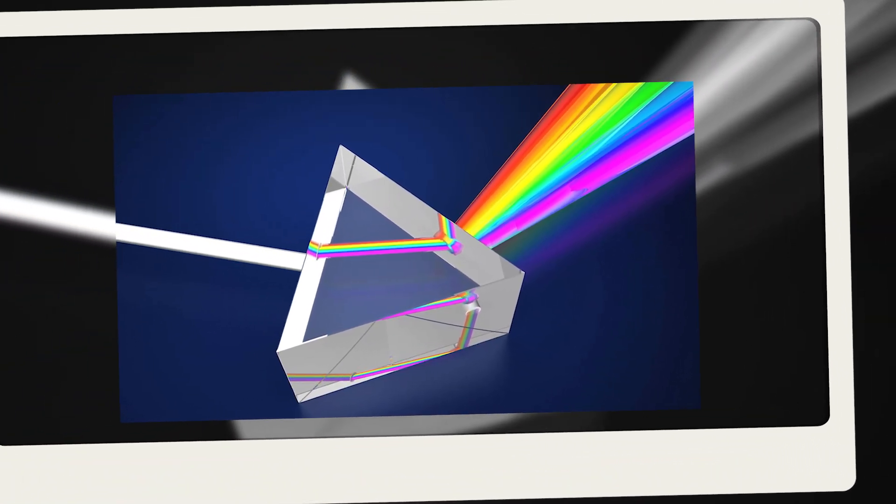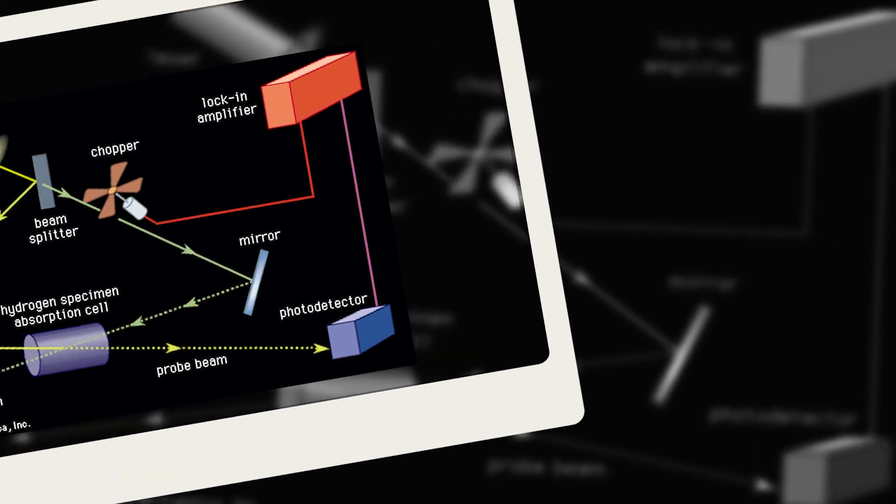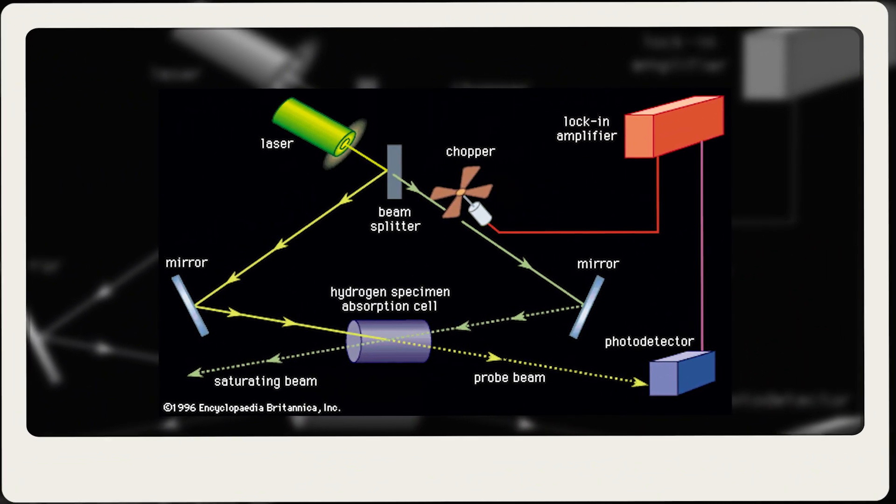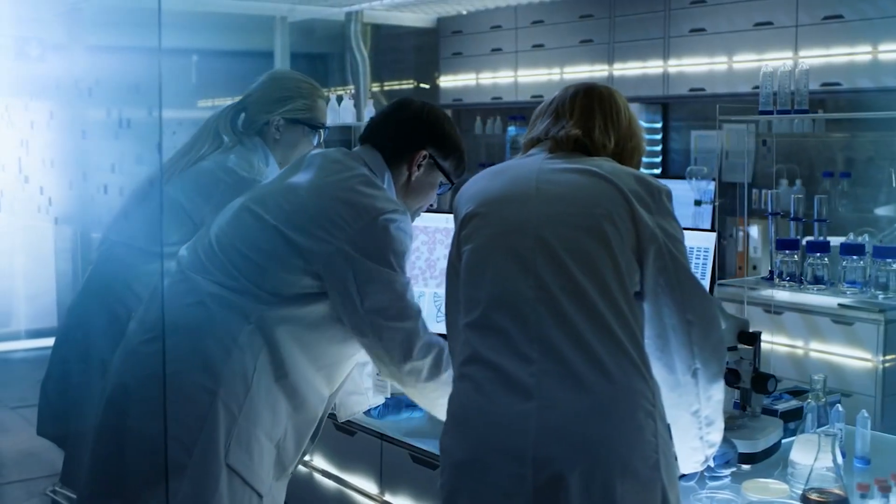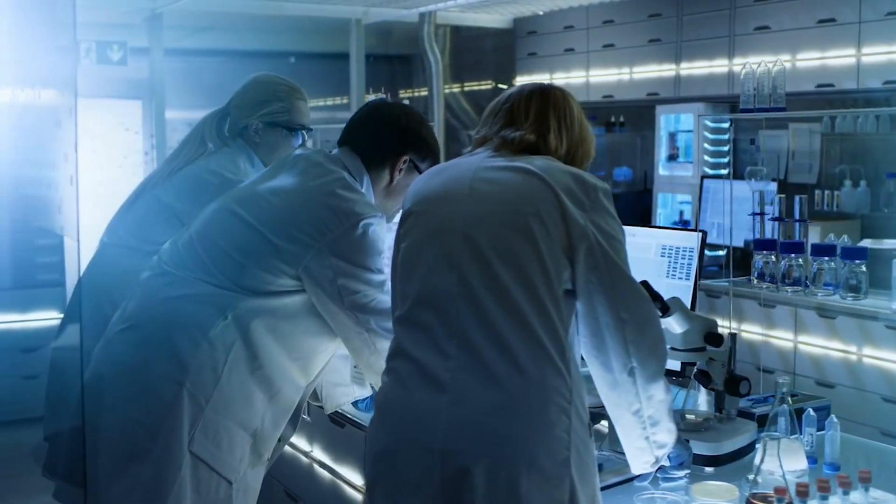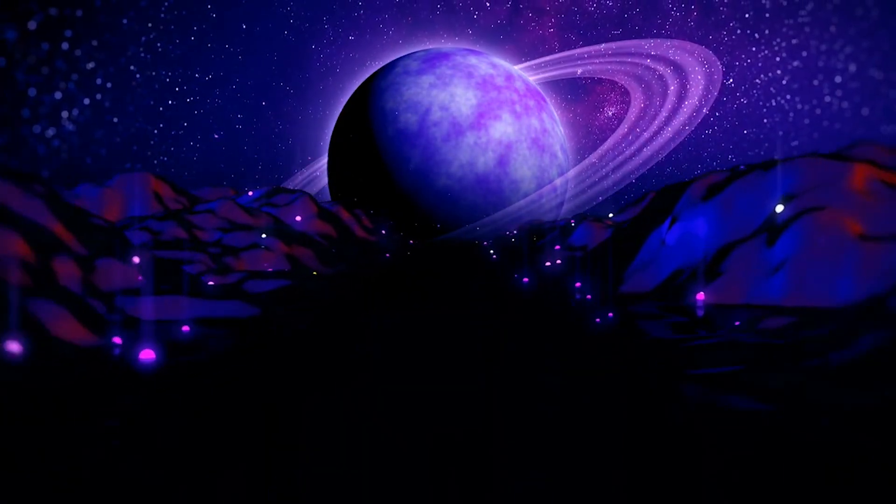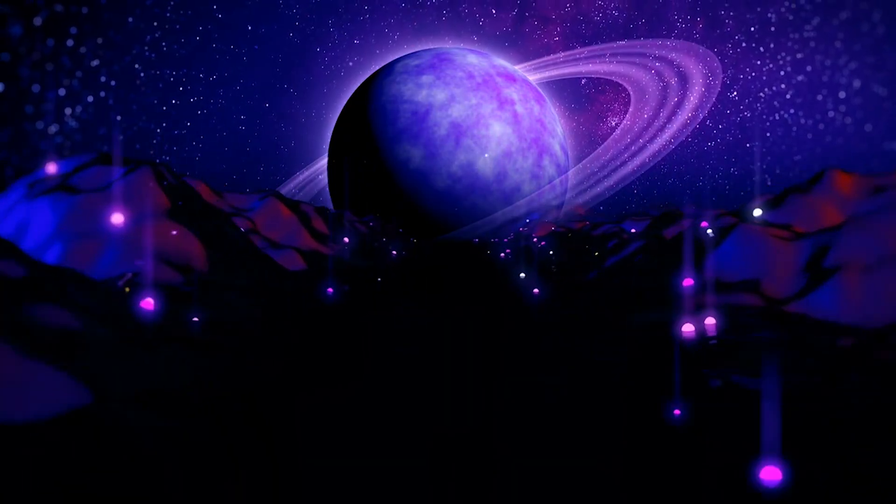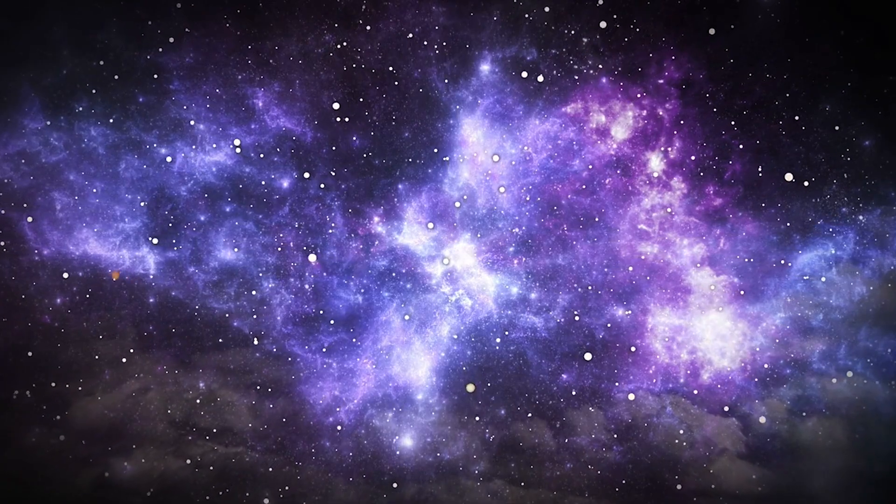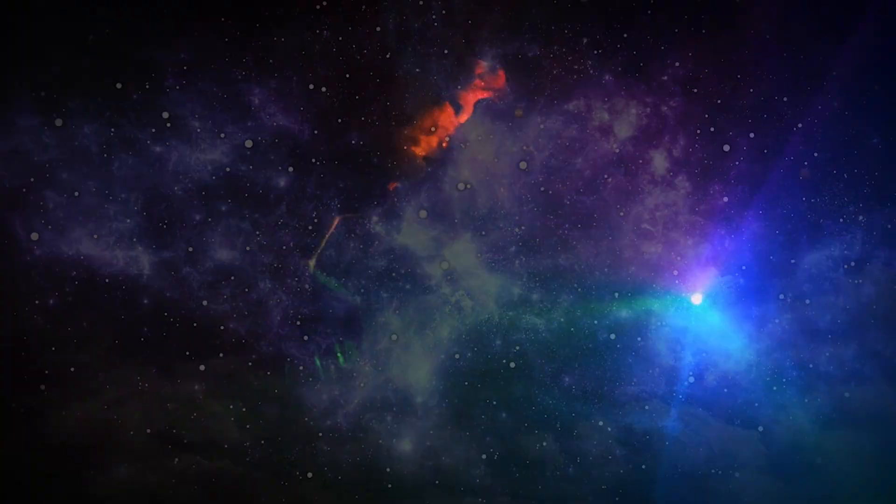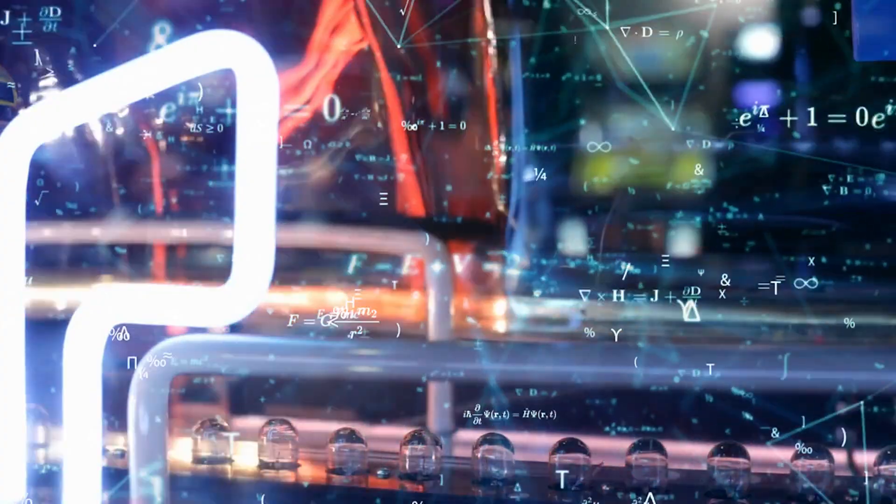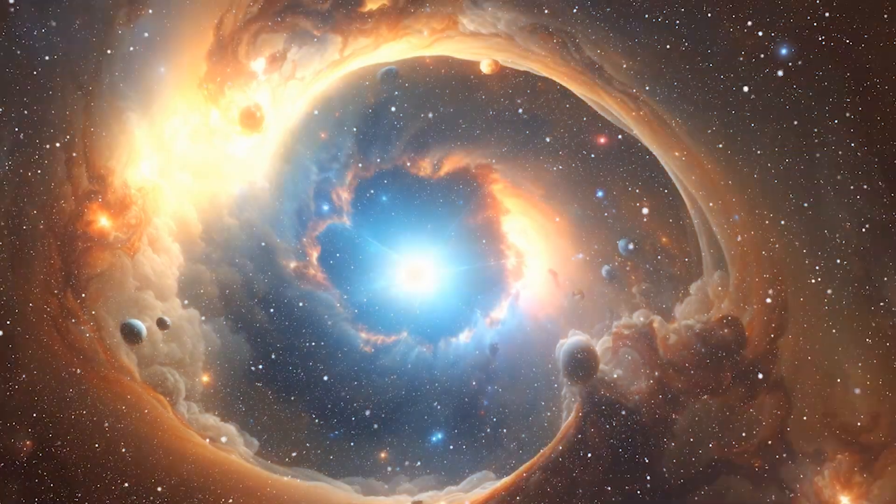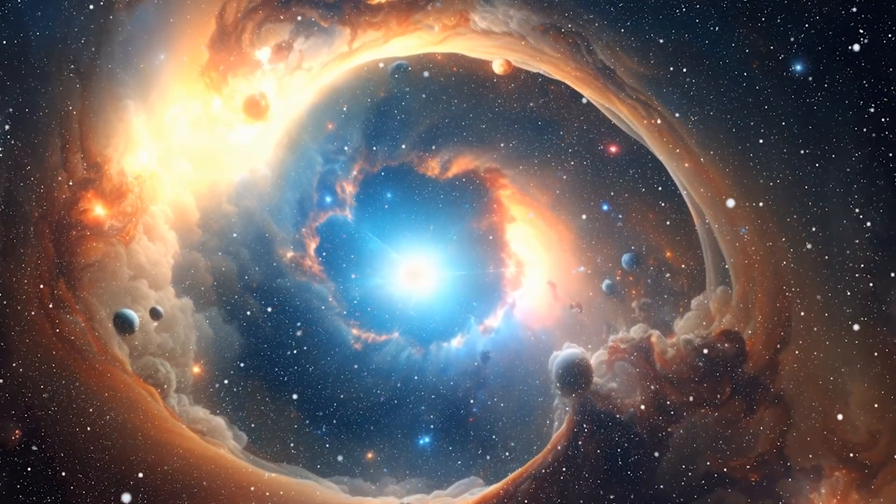Spectroscopy, the study of how matter interacts with light, uses this property to identify elements, even from great distances. By observing the colors of light that an element emits or absorbs, scientists can determine its composition. This is how astronomers discover what distant stars and planets are made of. The light reaching Earth from across the galaxy passes through a prism or diffraction grating, splitting into a spectrum of colors. Each dark or bright line in that spectrum corresponds to a specific element. The same physics behind a glowing tube of neon gas also allows humanity to read the chemical signature of the universe itself.